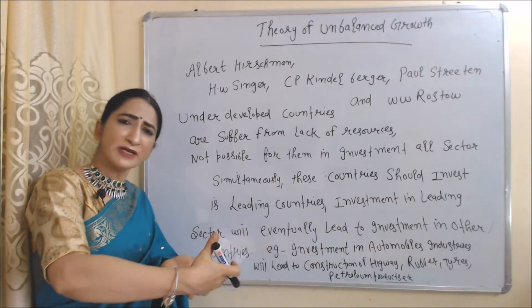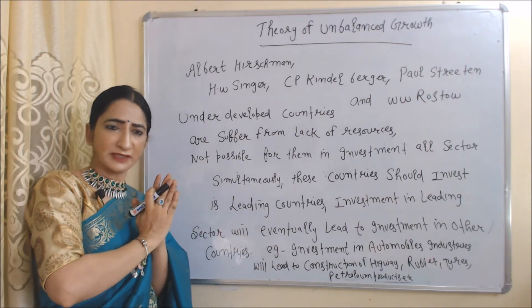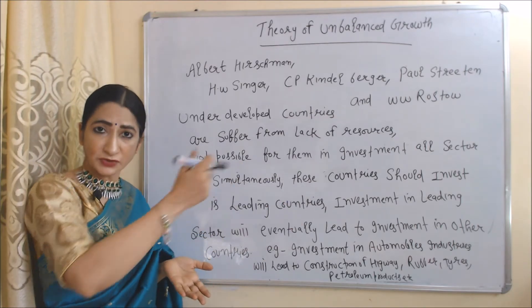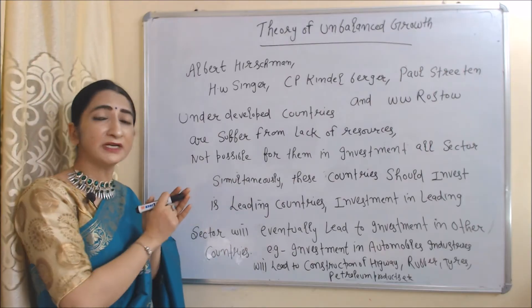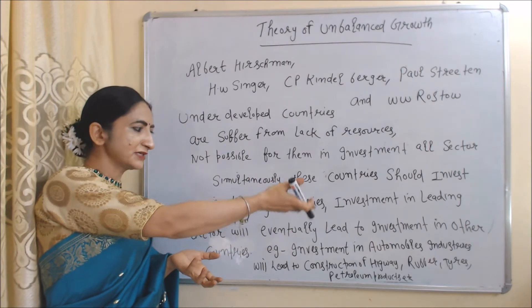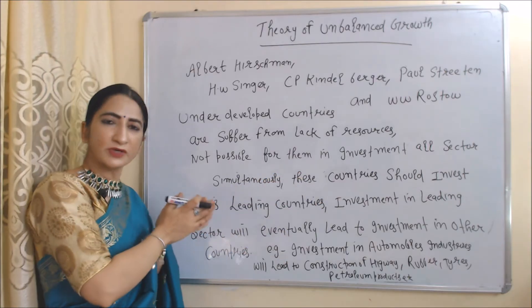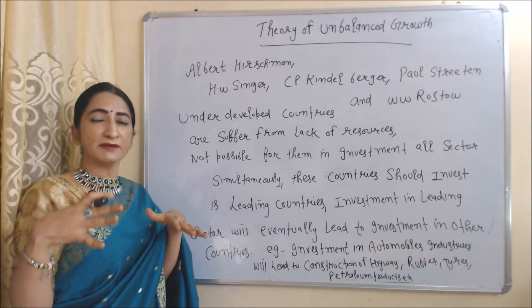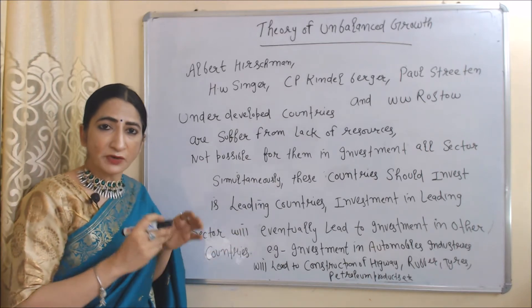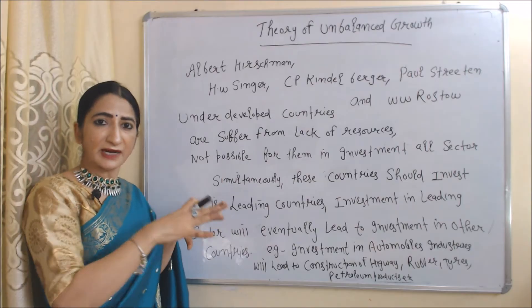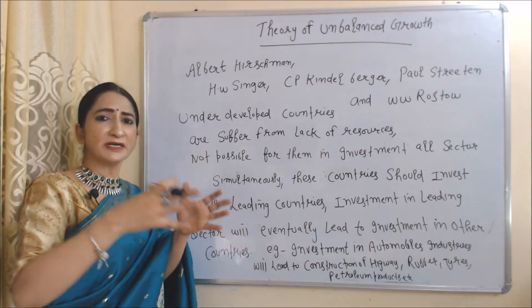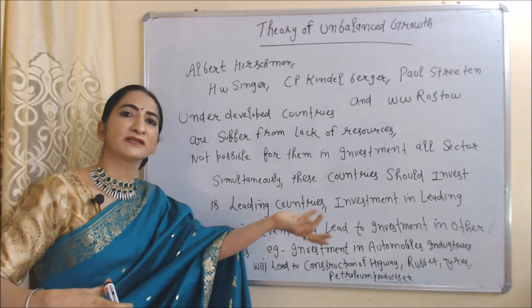Investment in leading sectors will eventually lead to investment in other sectors. For example, investment in the automobile industry will lead to investment in construction of highways, new investment in the rubber industry, new investment in the tire industry, and new investment in petroleum products. Or, investment in electricity will lead to investment in small-scale industries. So, underdeveloped countries only need to invest in leading sectors, and eventually that will lead to investment in other sectors.